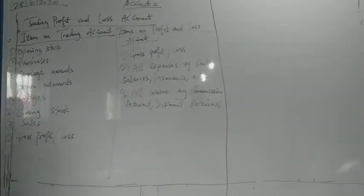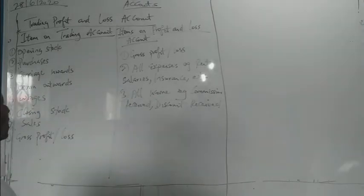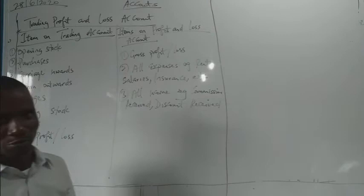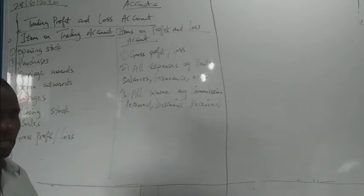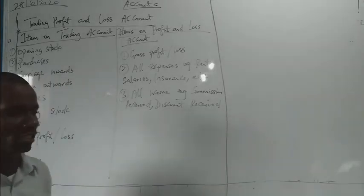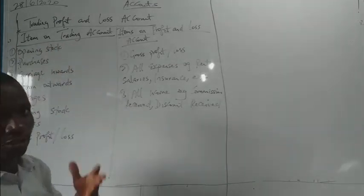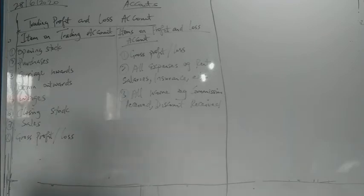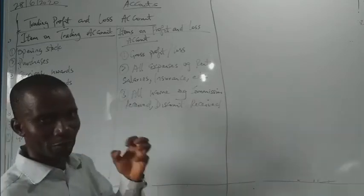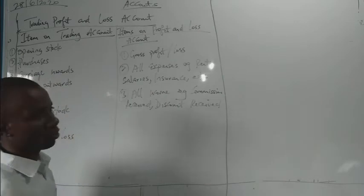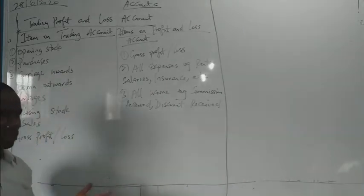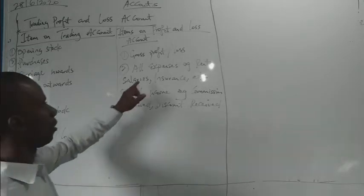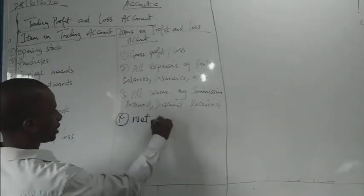Now we are going to look at trading profit and loss accounts. When I was introducing the procedures account, you know the account follows a procedure pattern from source document to journal to ledger to trial balance. From the trial balance, those list of balances, you will now prepare what is called a trading profit and loss account. The essence of it is to know the performance of the business, and performance is measured in what is called the bottom line — either gross profit, gross loss, net profit, or net loss.